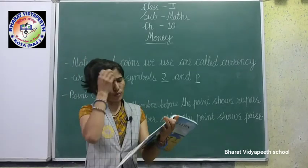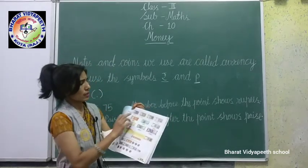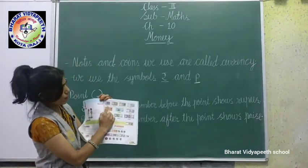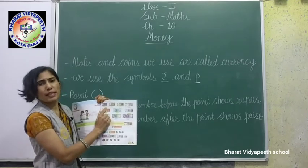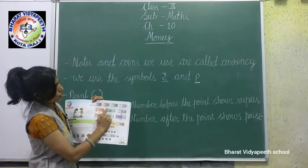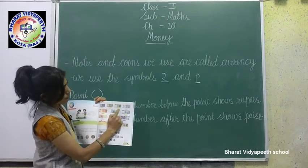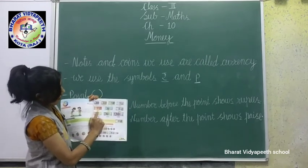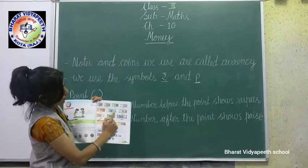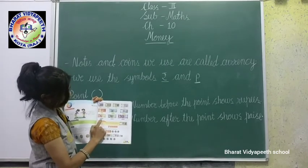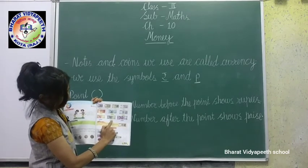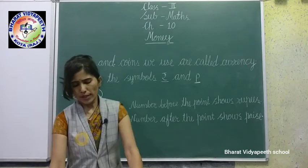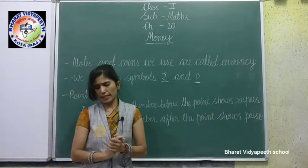The notes we use are: 1 rupee note, 2 rupees, 5 rupees, 10 rupees, 20 rupees, 50 rupees, 100 rupees, 200 rupees, 500 rupees, and 2000 rupees. These are the notes we get to see.